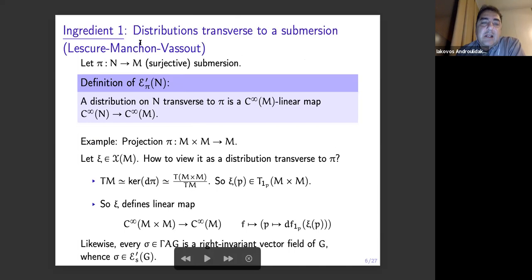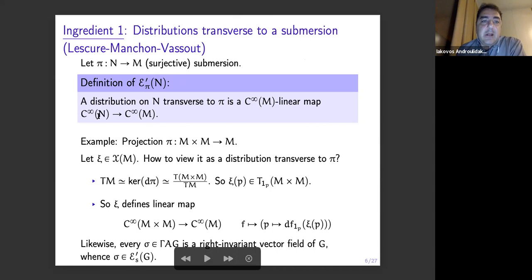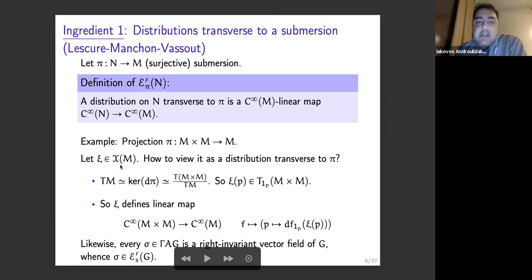So let me tell you about the first ingredient. What does it mean to have distributions transverse to a submersion? So let's say we have a surjective submersion. The distribution transverse to the submersion is a C-infinity-M linear map from C-infinity-M to C-infinity-N. Very roughly. Of course, C-infinity-N is a C-infinity-M module. So for example, just if you take the projection from the Cartesian product to M — but now I see the Cartesian product as a pair groupoid, really.